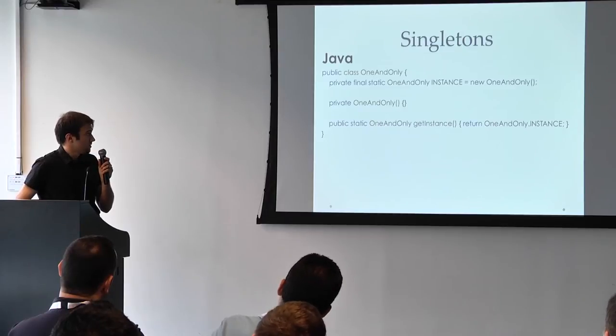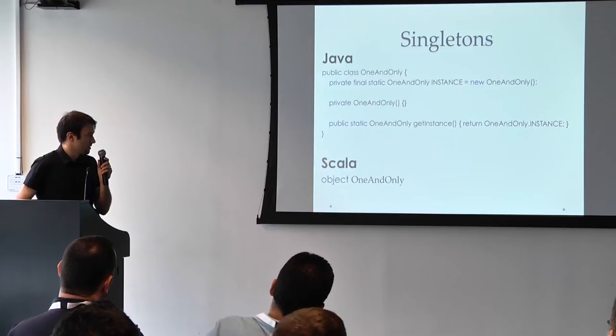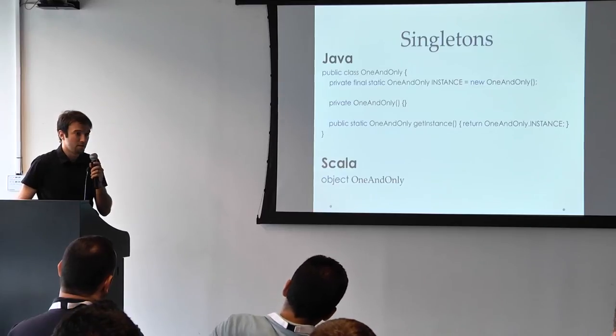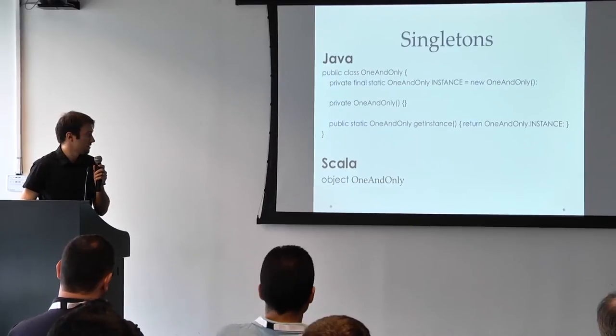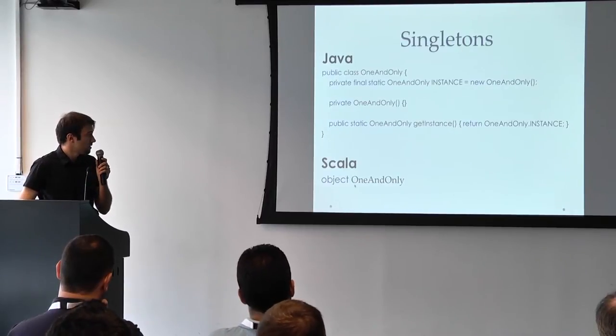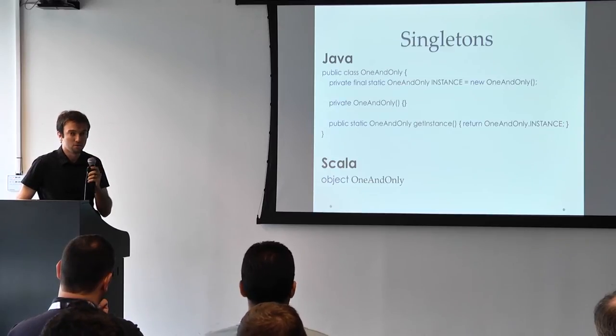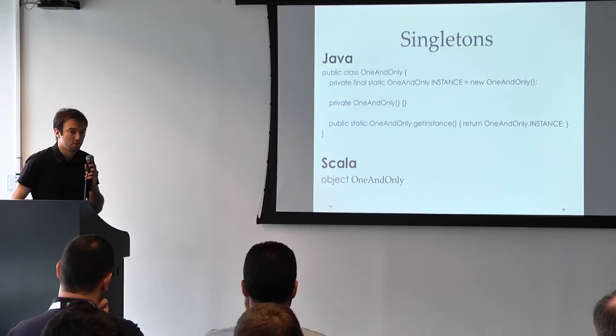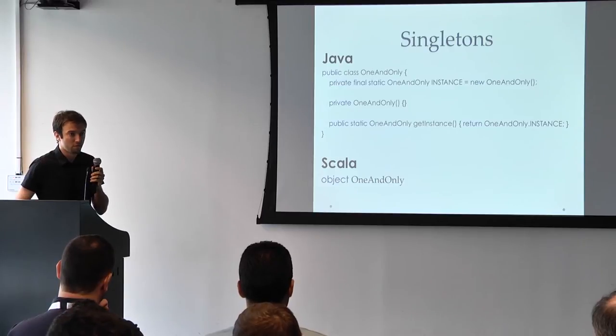This is what singleton looks like in Java. And this is the equivalent in Scala. Which means that basically the design pattern is now a first class citizen in the language and has its own keyword. This also means that we can inherit and use all the object-oriented techniques that work with instances but do not really work with static classes.